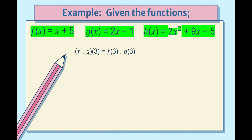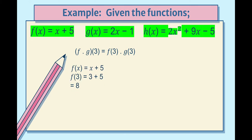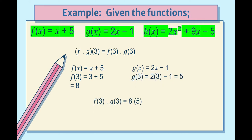For (f · g)(3): f(3) = 8 and g(3) = 5. We multiply f(3) · g(3) = 8 × 5 = 40.